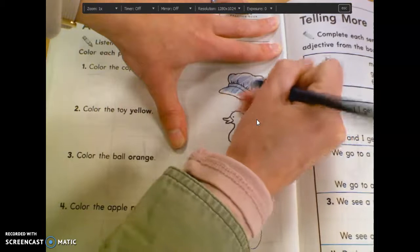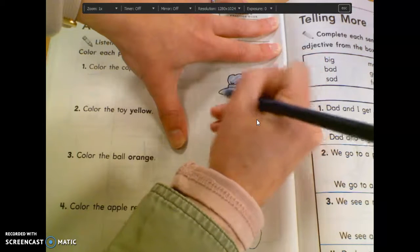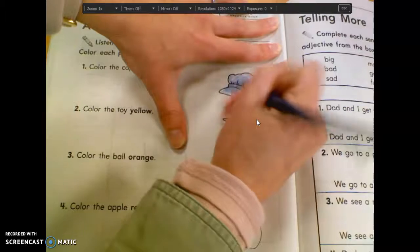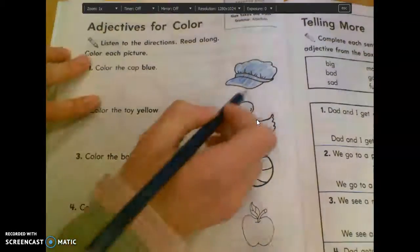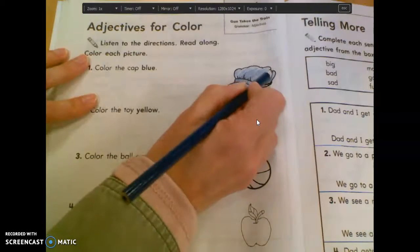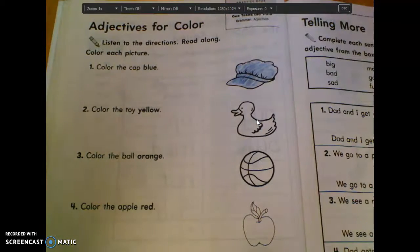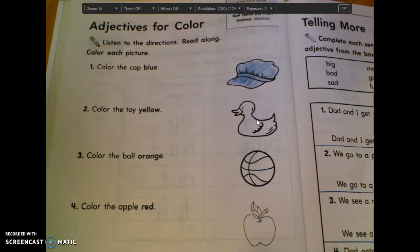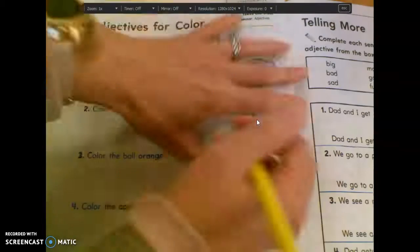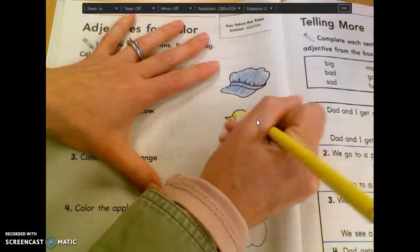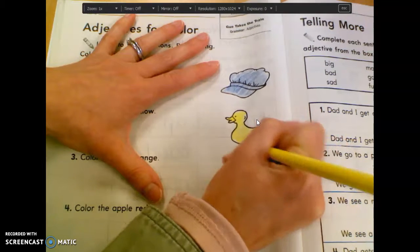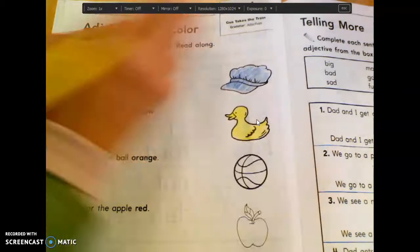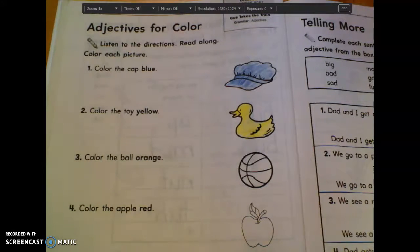Color it nice and neatly. Okay, try to do your very best coloring. Okay, the next one says color the toy yellow. So color the toy duck yellow. Let's do our very best coloring. I'm looking around and see how a few people are scribbling a little bit. Don't scribble. You're in first grade now. Do your very best coloring. Good. Stay in the line. Make it look nice and neat.